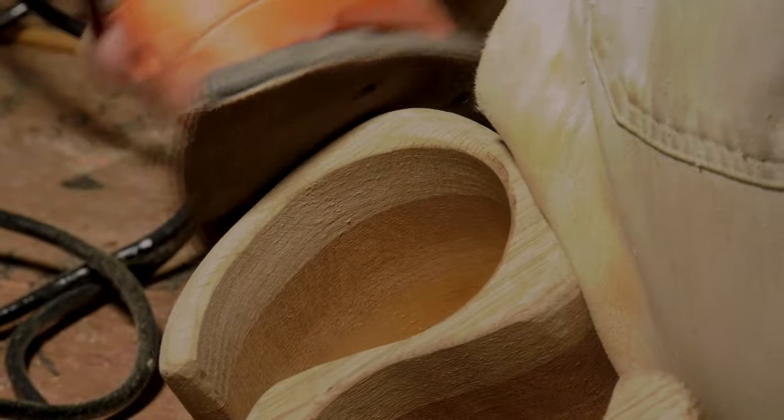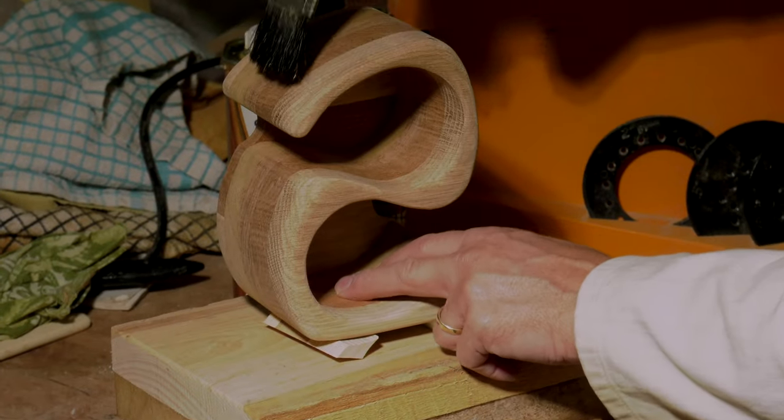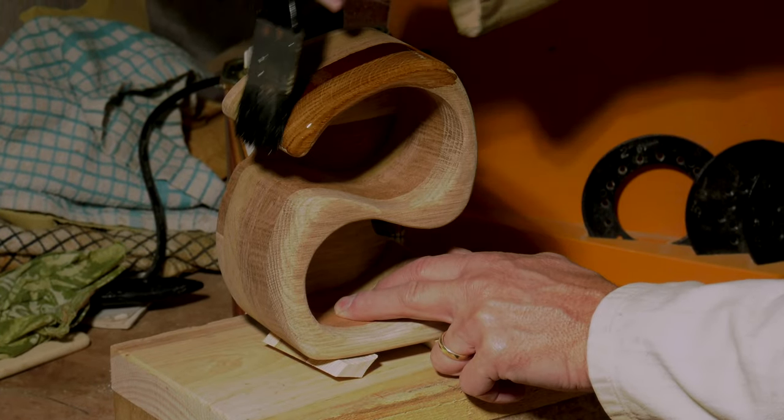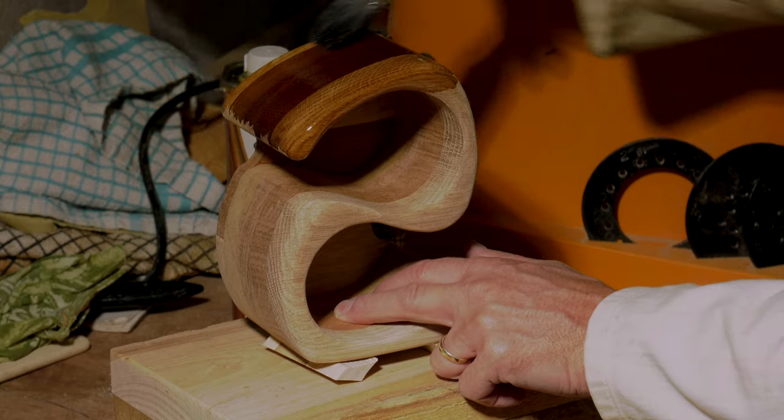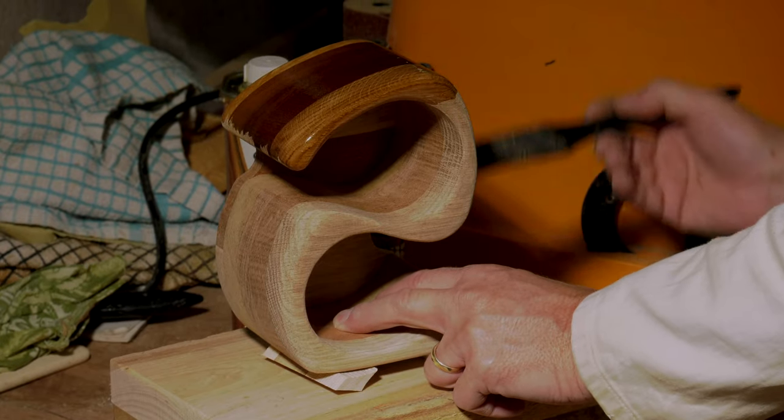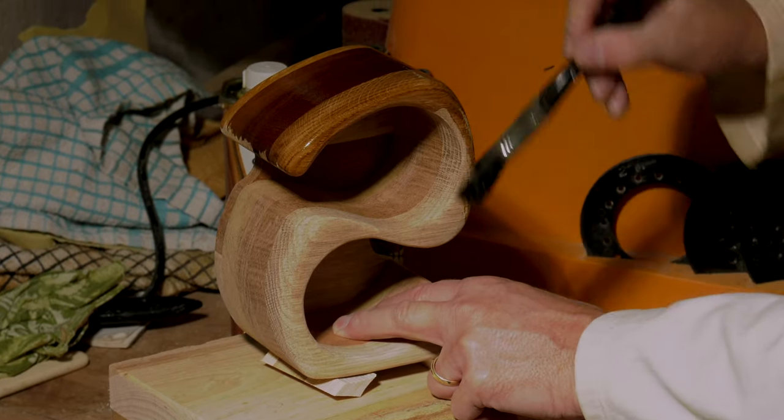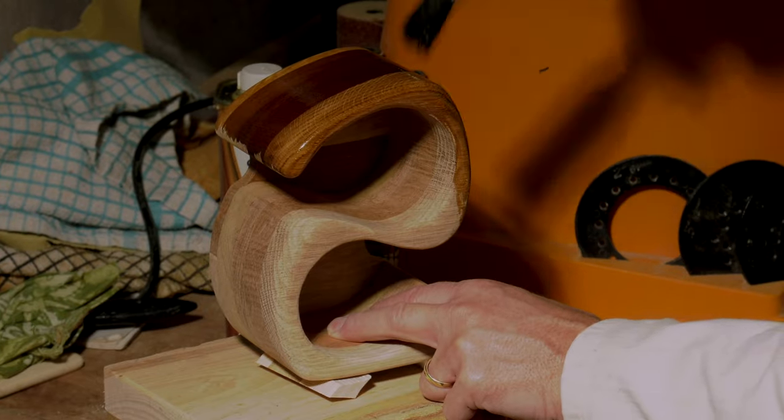The box and drawers then get their first coat of Danish oil. This is where you see the various wood colours and grains show themselves for the first time. The transformation can be remarkable. I guess this is my favourite stage.